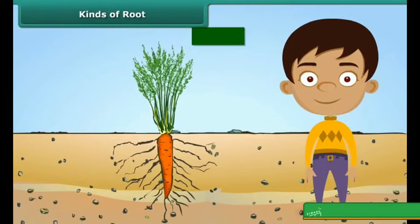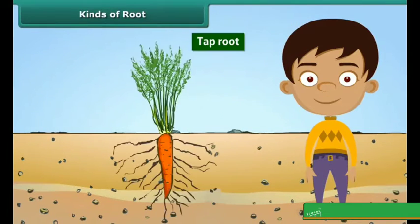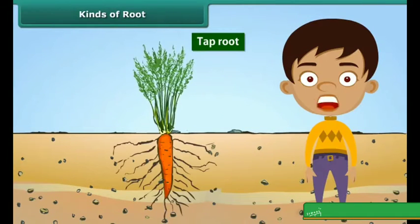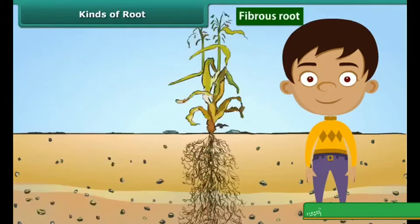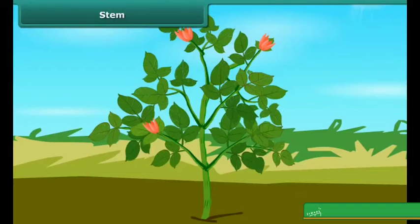There are two types of roots: taproot and fibrous root. Examples of taproot include radish, carrot, etc. Examples of fibrous roots are maize, wheat, rice, etc. Let us now talk about the stem.